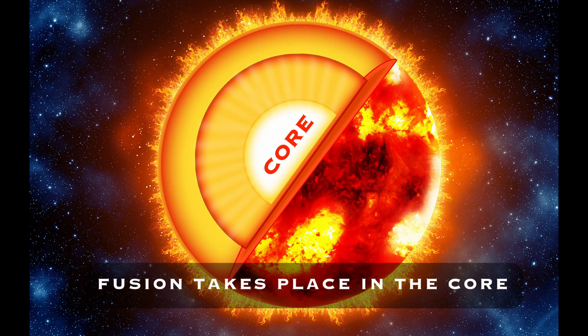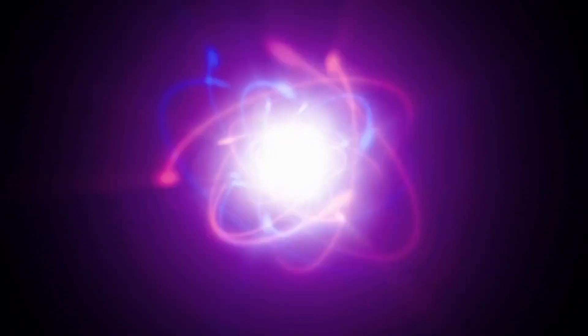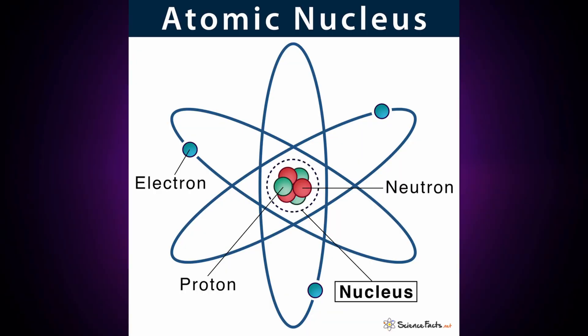The Sun produces energy through a process called nuclear fusion, and this process happens in the core or the center of the Sun. The gravitational force is so strong here that it produces the extremely high temperatures and pressures that are needed for fusion. Fusion doesn't just happen unless you have an incredible amount of energy to produce a fusion reaction. Fusion means the fusing or combination of two or more separate objects into one, and nuclear refers to the particles that make up the nucleus of an atom. At the simplest level, the nucleus is composed of two kinds of particles, protons and neutrons.